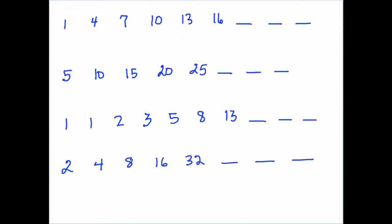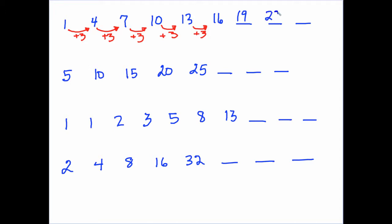A sequence is just a list of numbers in order that follow a pattern. Let's take a look at this first sequence: 1, 4, 7. If we follow the pattern, it looks like each time you add 3 to get the next number. Add 3, and if we extend this sequence we just add 3 to 16 and get 19, add 3 to get 22, add 3 and get 25.